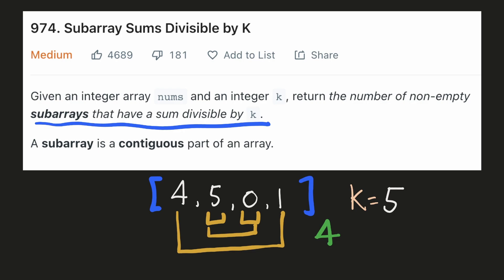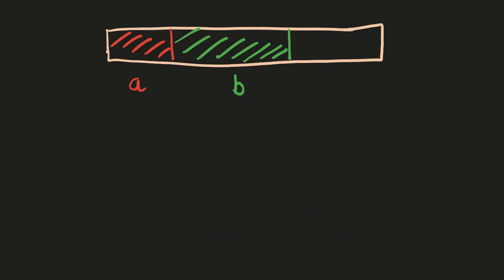Let's try to come up with an intuitive solution for this. Let's consider this example where the red subarray is not divisible by k and the green subarray is divisible by k. Let's label these subarray sums as a and b respectively. Since the red part is not completely divisible by k, let's assume its remainder to be x.